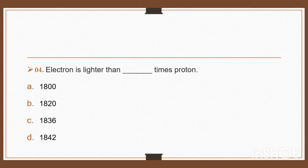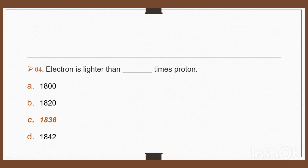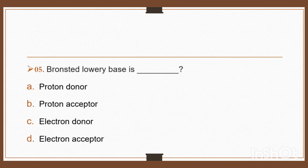Question 4: Electron is lighter than dash times proton — option A: 1800, option B: 1820, option C: 1836, option D: 1842. Electron is lighter than 1836 times proton. Right, option C: 1836.